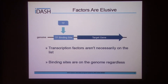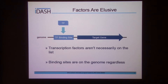Ideally, you want to be looking at the transcription factors that are controlling that set of genes. A transcription factor is a protein — you can see a transcription factor here. Transcription factors regulate target genes by binding on the genome to things called transcription factor binding sites, and they can increase or decrease the expression of target genes. When you get that gene list out of your microarray experiment, it's not necessarily going to have those transcription factor genes in the list, but the binding sites for the transcription factors are going to be on the genome regardless.